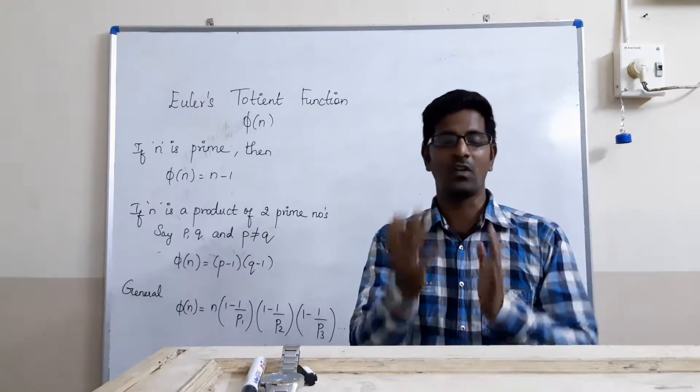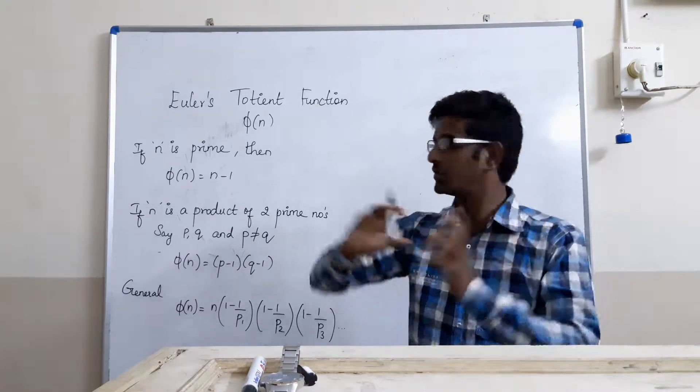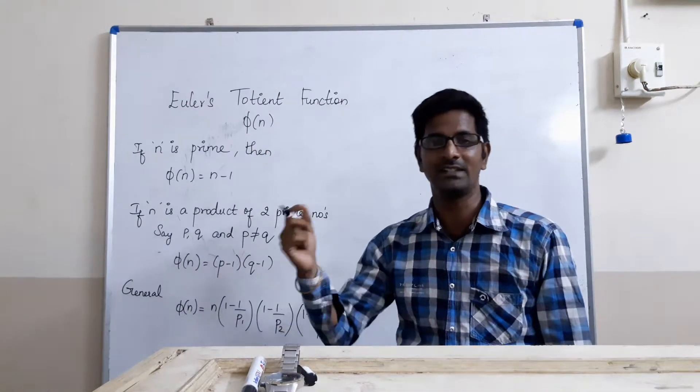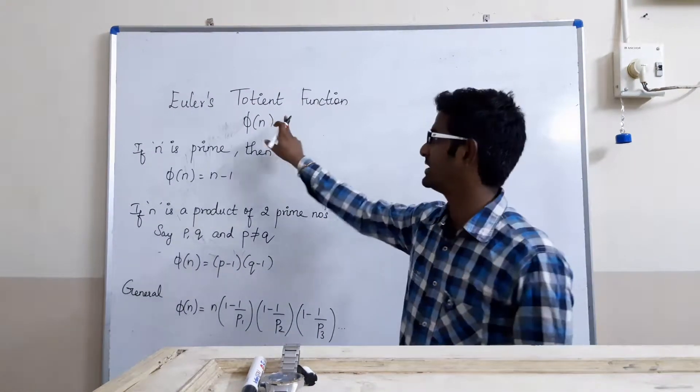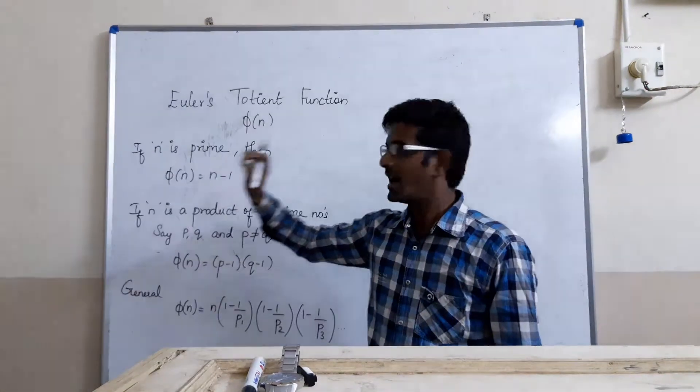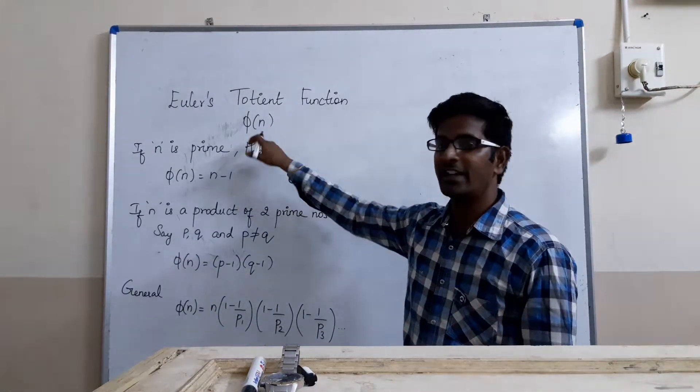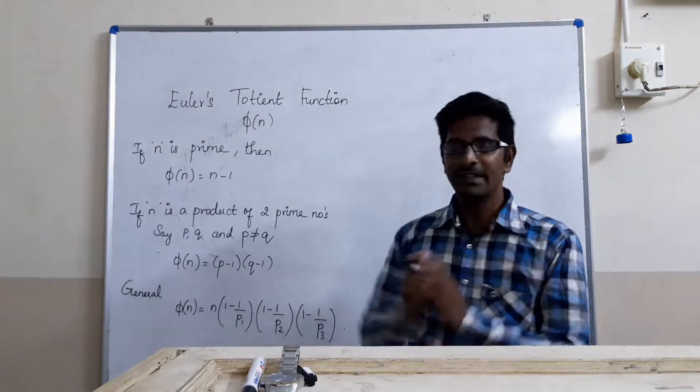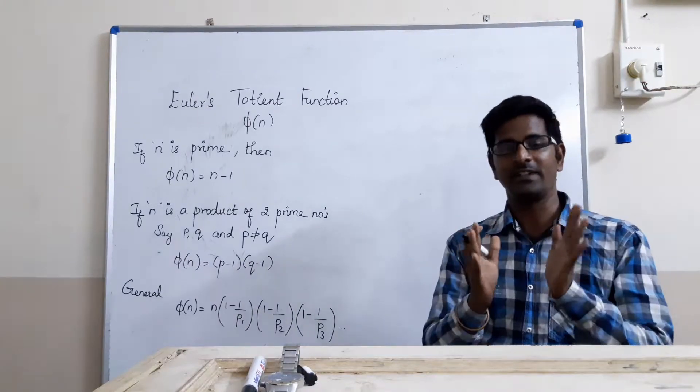Generally, how to solve this problem - I am not going deep into this Euler's Totient function. In the next lecture, we will see how actually this function is created and generated. Now, we shall see how to solve if a number is given and what is the answer for Euler's Totient function. Simply speaking, we will see three cases.